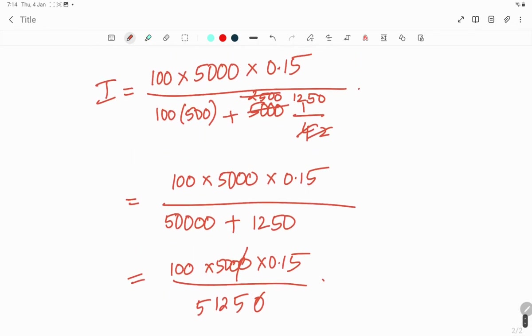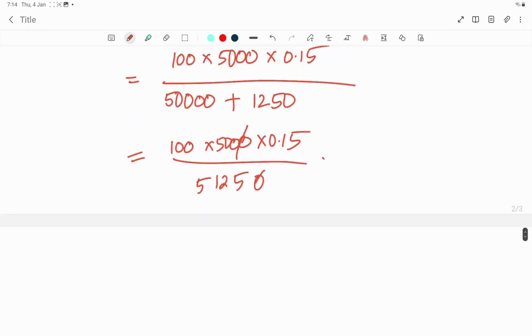Therefore 100 × 5000 × 0.15 divided by 51,250. When you simplify this you get 1.46, which we can round to 1.5 amperes.